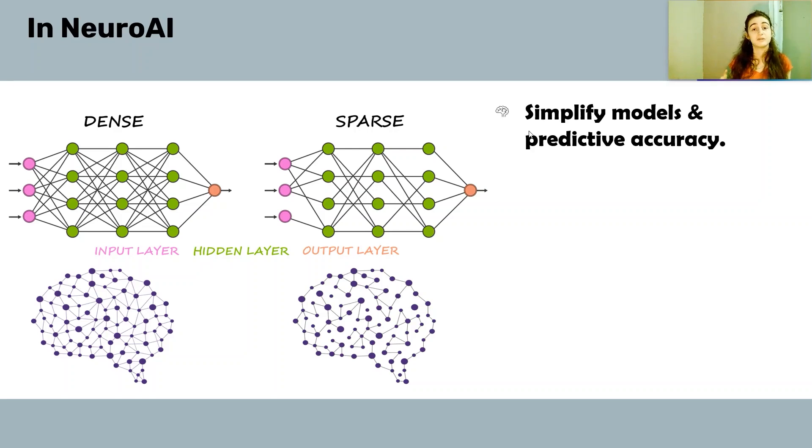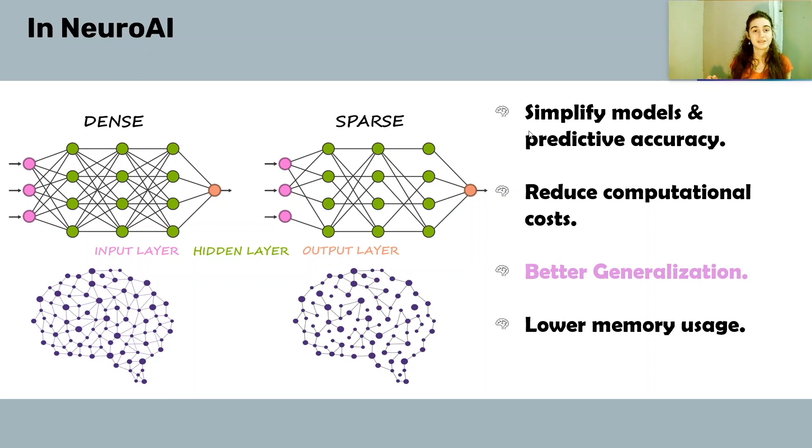In particular, that includes simplifying the models and improving accuracy. It also includes reducing computational costs and improving our generalization ability through regularization. In addition, it contributes to lower memory usage and mimics the natural efficiency that we see in brain computation.